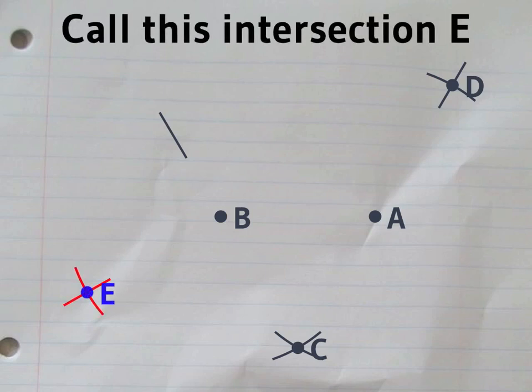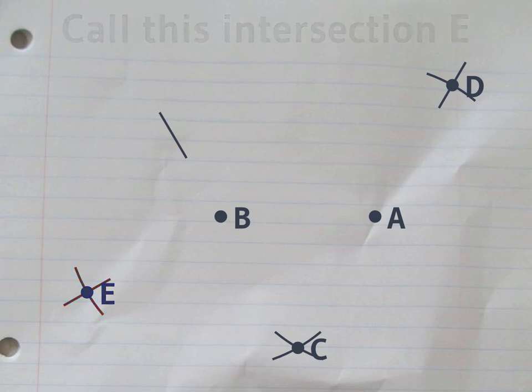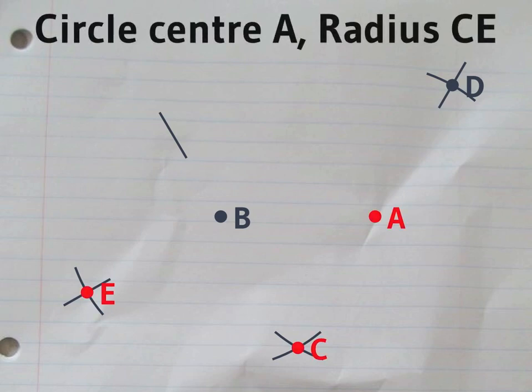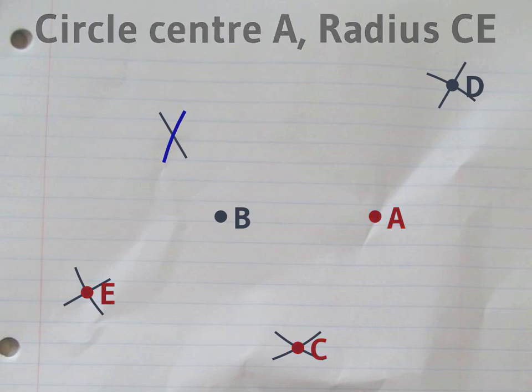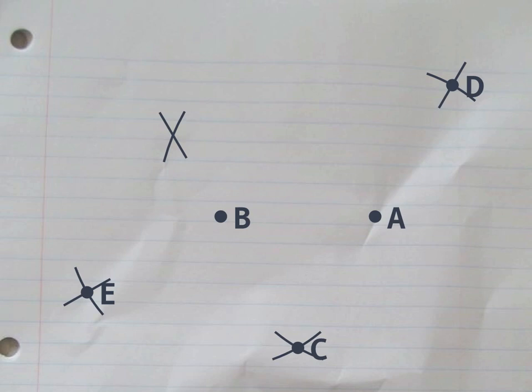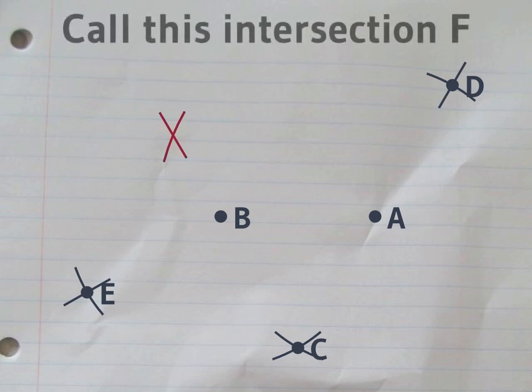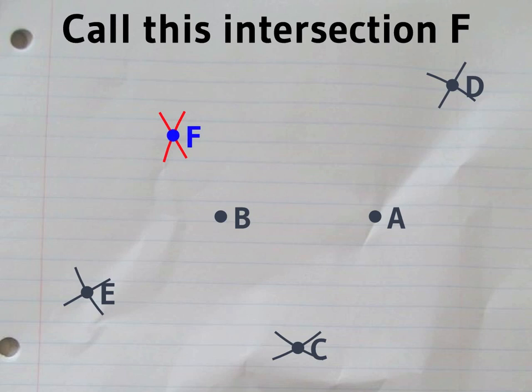We'll give a name to this new intersection point, E. Set your compass to the distance between C and E and draw a circle centered on A. That circle meets our first straight line at a point which we'll call F.